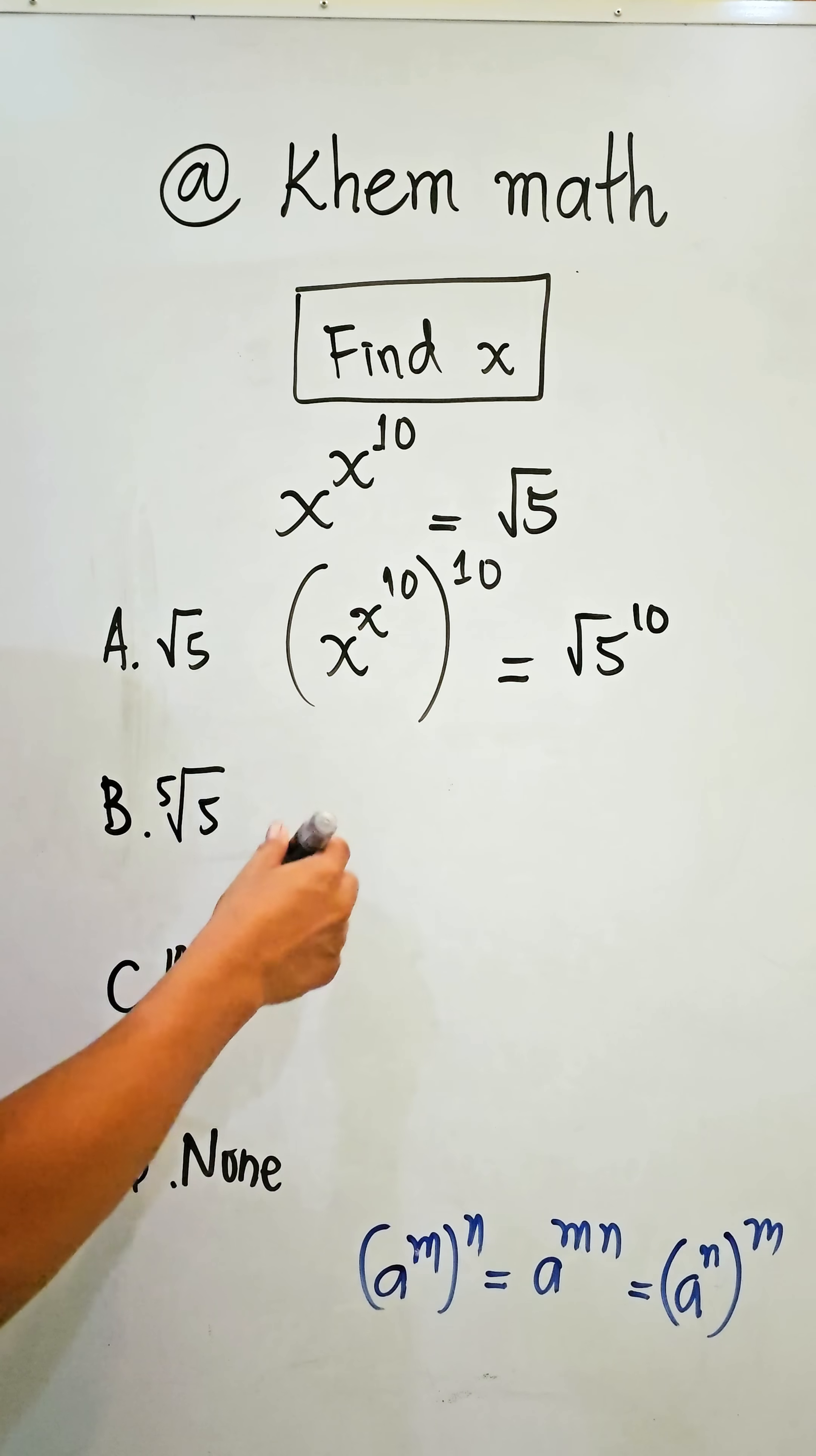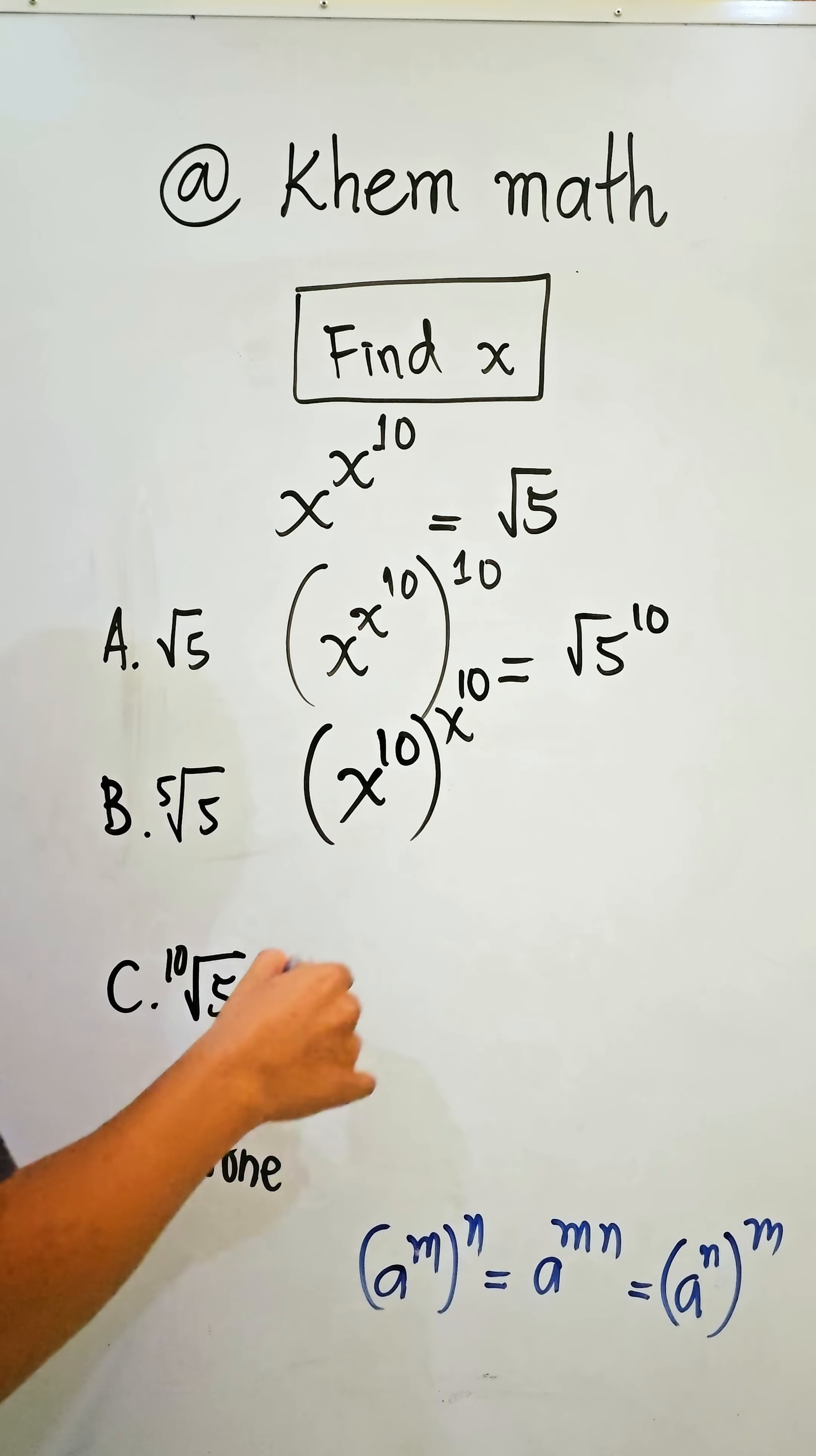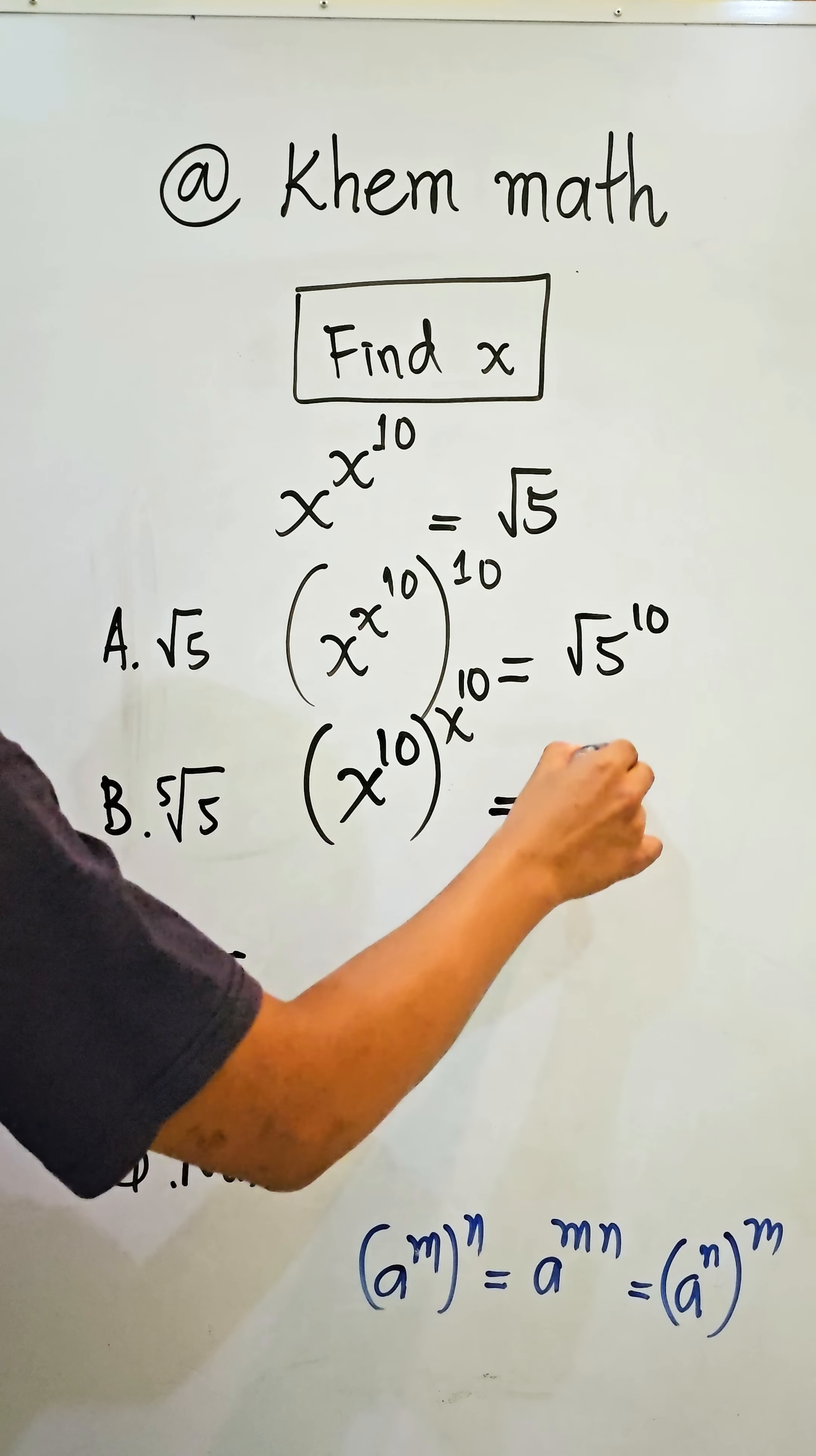It equals x to the power of 10, raised to the power of x to the power of 10. We simplify - simplify the 10 with the square root - and we get 5 to the power of 5.